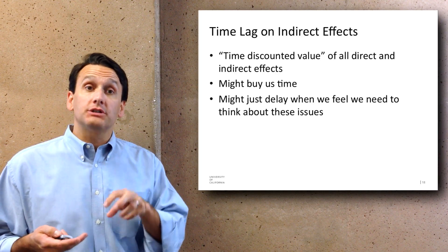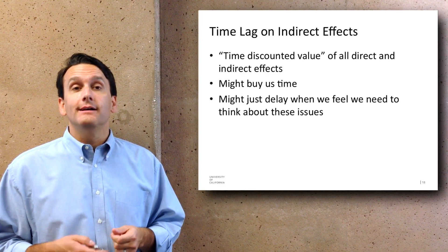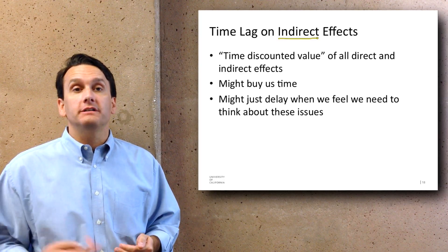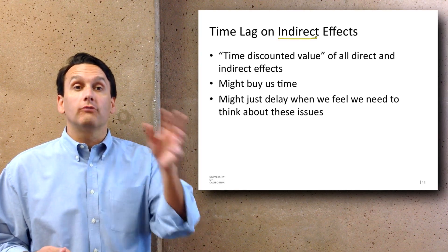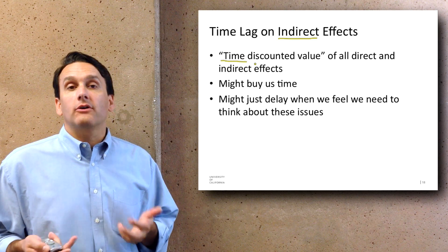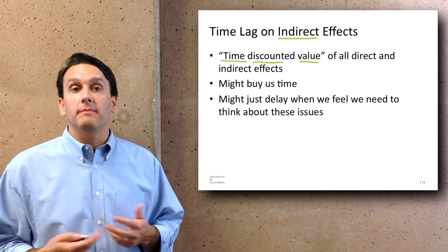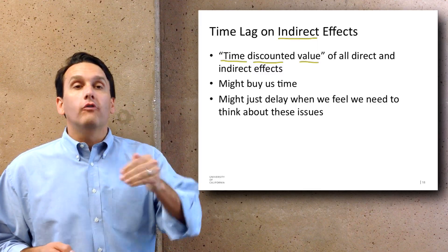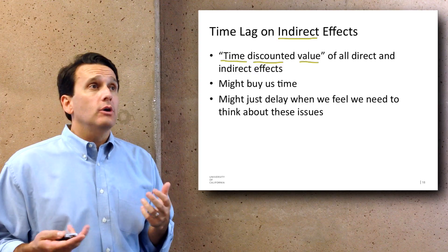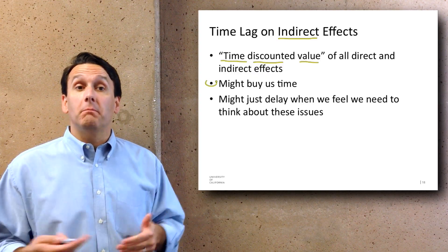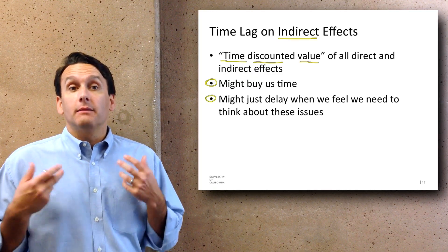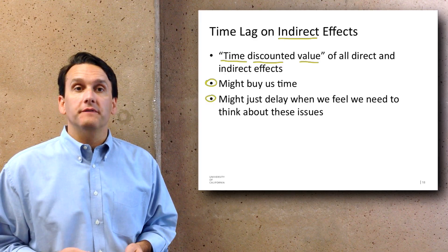Another aspect that impinges upon this is the time lag on indirect effects. Whereas direct effects take place immediately, indirect effects often take weeks, months, years, or decades to ripple through all interconnected systems. The time-discounted value of all direct and indirect effects is another way to think about it. Various changes like increased efficiency might buy us time to address some of these issues, but it may also just delay the point at which we as a civilization feel the need to think about sustainability.